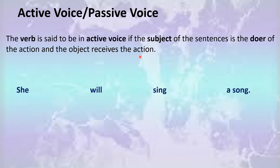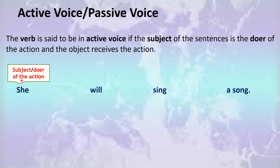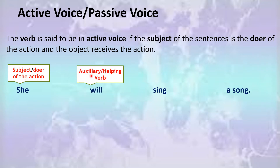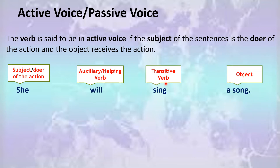For example: 'She will sing a song.' You can see that 'she' is the subject or doer of the action. 'Will' is the auxiliary or helping verb. 'Sing' is the transitive verb — you already know that the verb which has a direct object is known as a transitive verb.